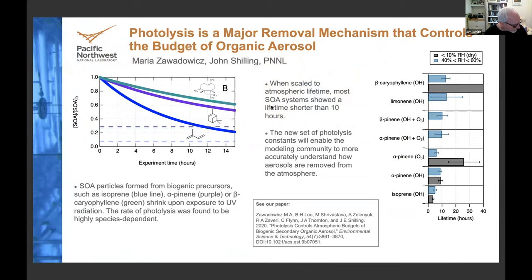Zawadwicz, with Thornton on deck. Last year we used John Schilling's environmental chamber to measure photolysis frequencies of various SOA compositions, capturing natural variability in biogenic precursors and conditions. We found very short removal timescales for most SOA types — on the order of less than 10 hours — but also non-photolabile cores that can persist much longer. Our recent paper in ES&T also uses WRF-Chem to model how photolysis removes SOA in the Amazon, where we found it to be the dominant removal mechanism.